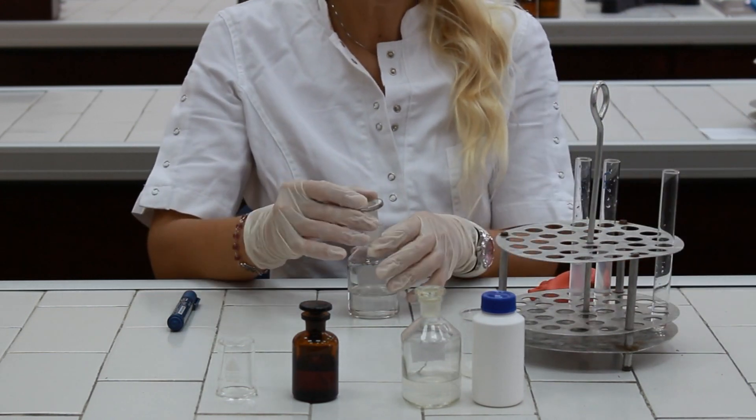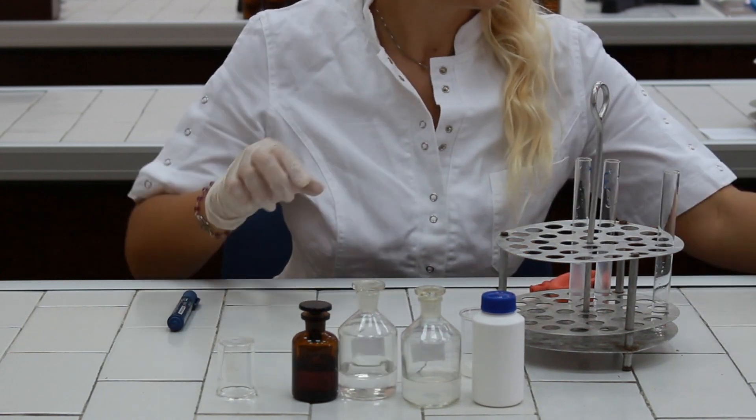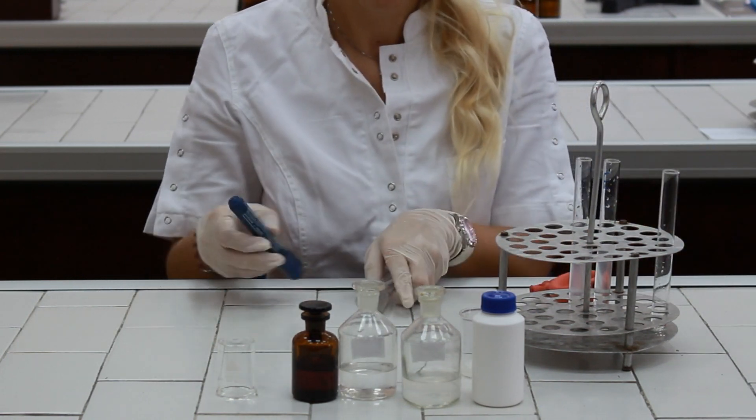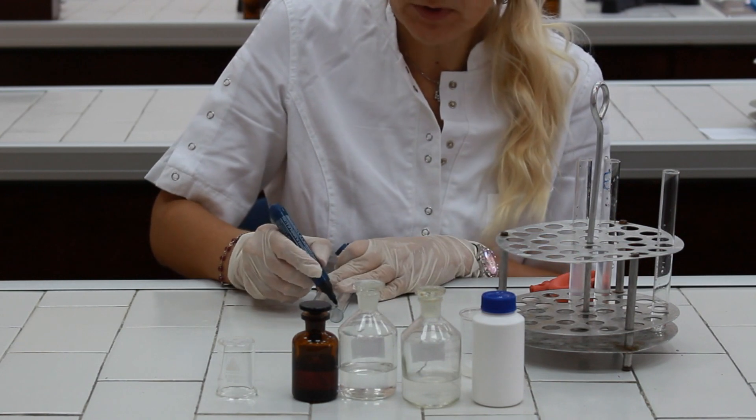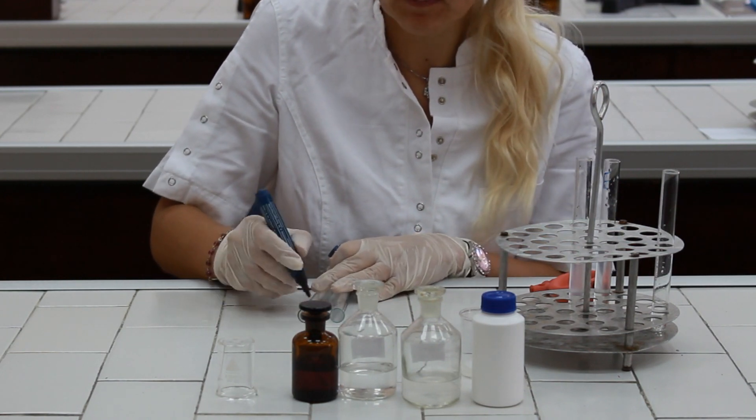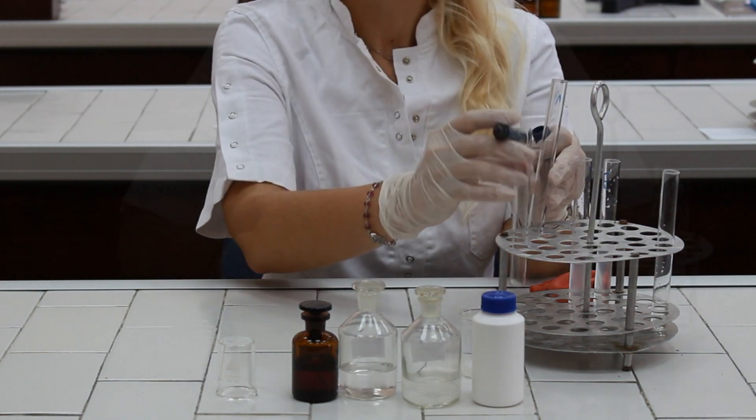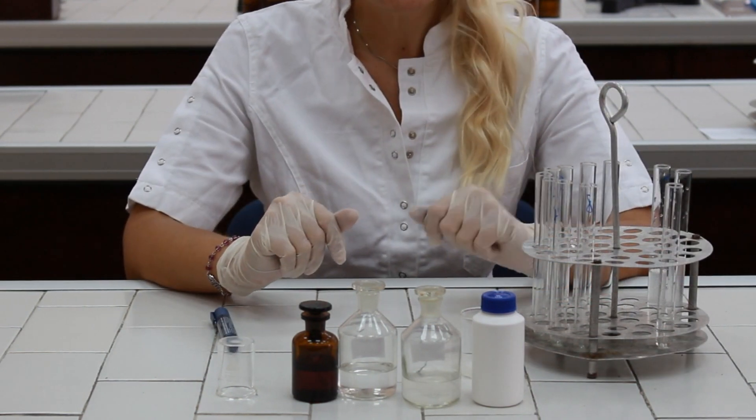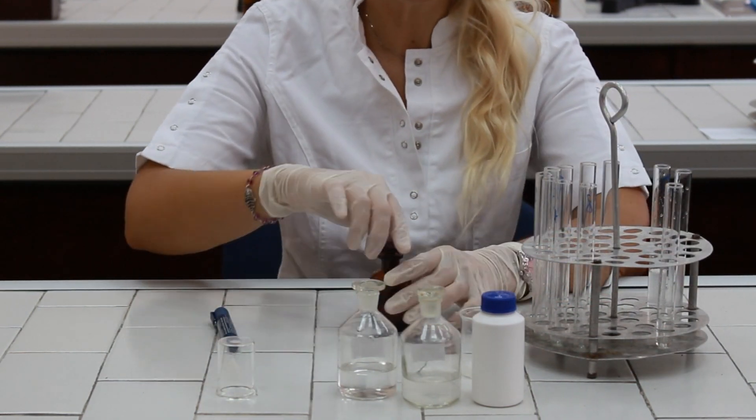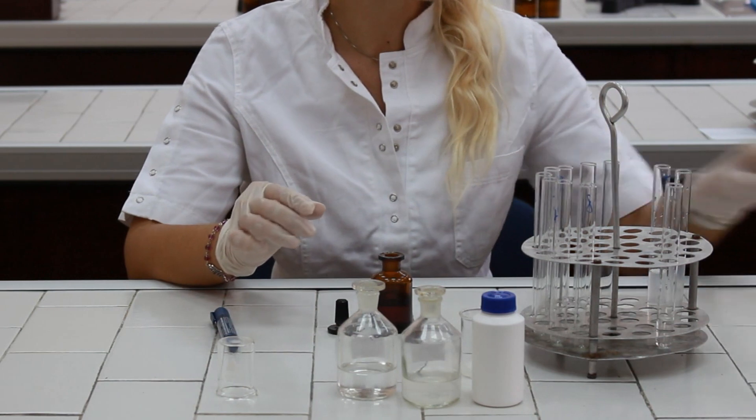Now, we need to take at least 9 test tubes and mark them with numbers from 1 to 9. In these 9 test tubes, we are going to pipette a few drops of iodine solution.